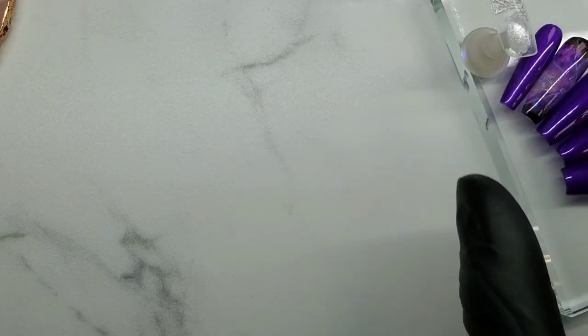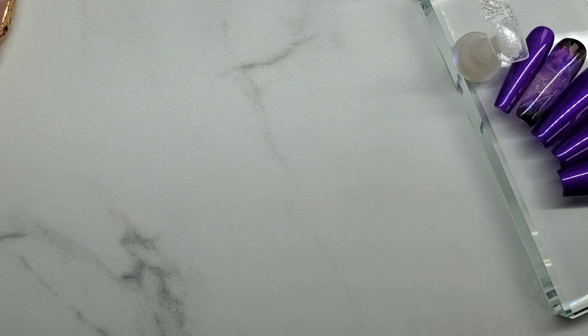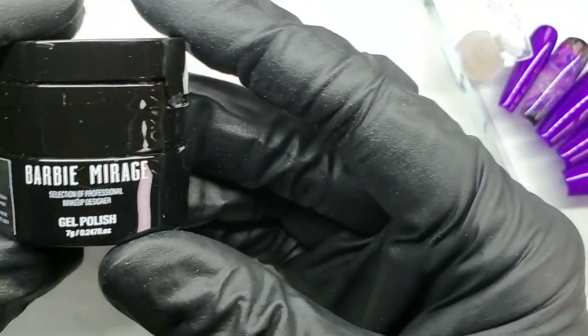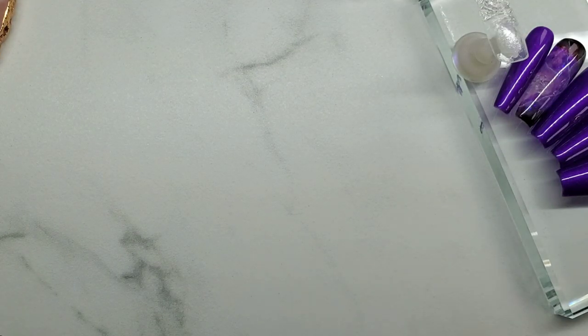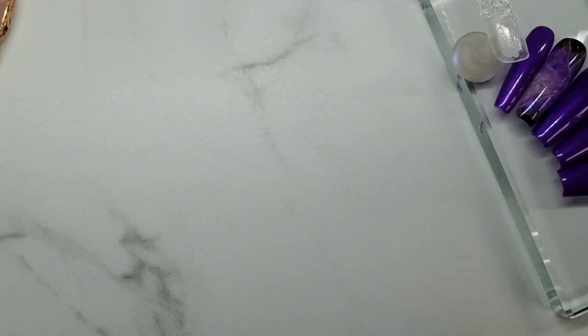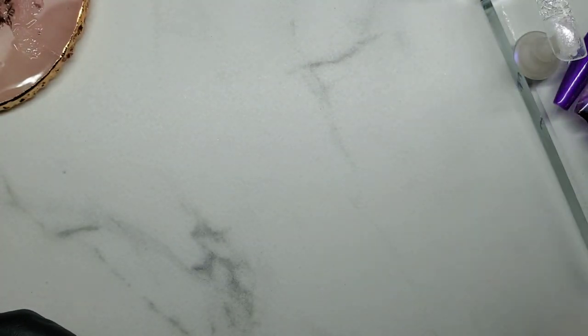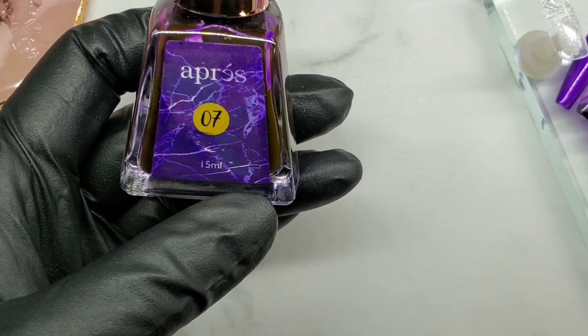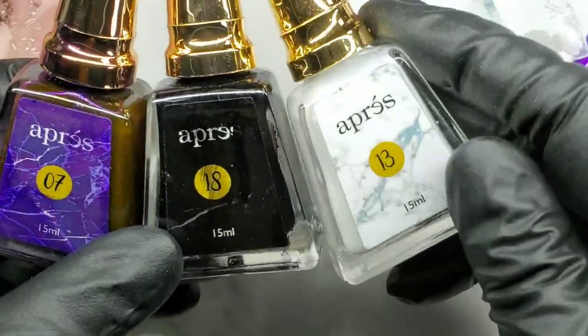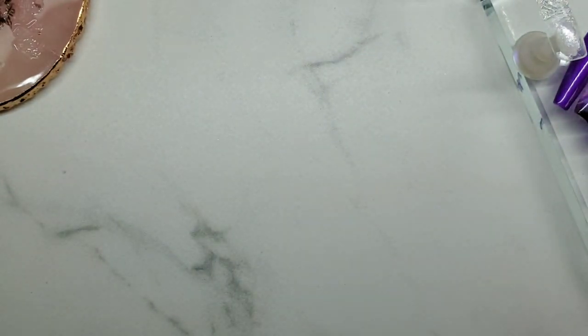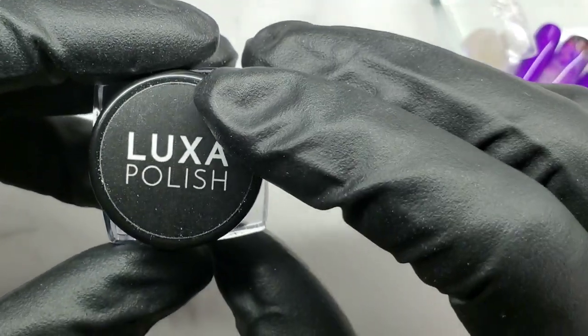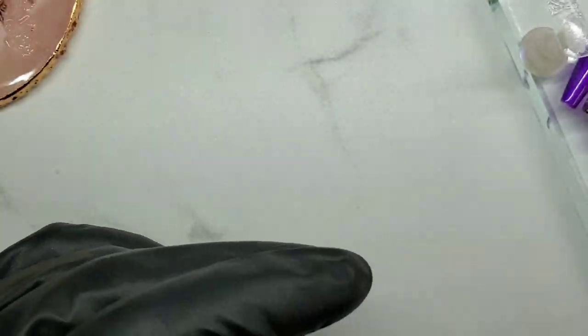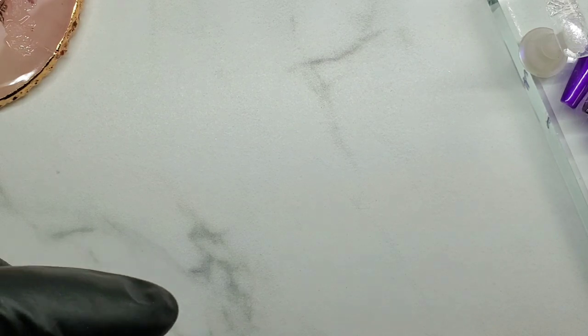The products we're using to make this amethyst geode are a no wipe thick gel, whether that's a hard gel, jewelry gel, or gem gel. We're thinning that out with a no wipe top coat. I'll use a matte top for my ink. For inks, we're using the Apre 7, Apre 18, and the White Apre. Also using the Luxa Polish Iron Flakes and the Luxa Polish White art gel.